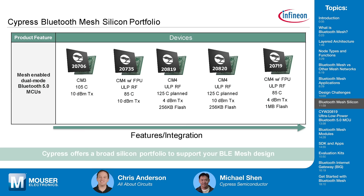The first silicon option is the 20706 — a Cortex-M3 supporting temperatures up to 105°C, which is useful for light bulb applications requiring high-temperature support. It supports 10 dBm TX output power, giving it a longer range. With longer range, you need fewer nodes for your complete mesh network.